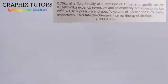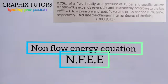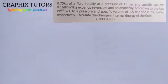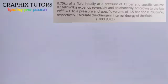Good everyone, my name is Graphics. Today we want to solve an exercise on the non-flow energy equation. The question says: 0.75 kilogram of fluid initially at a pressure of 15 bar and specific volume 0.1697 meter cube per kilogram expands reversibly and adiabatically according to the law PV to the power 1.25 equals C, to a pressure and specific volume of 1.5 bar and 0.7883 meter cube per kilogram respectively. Calculate the change in internal energy of the fluid.